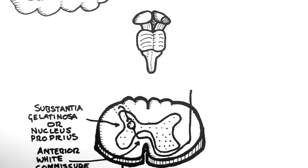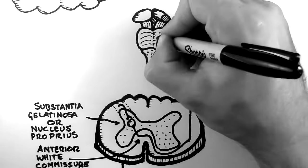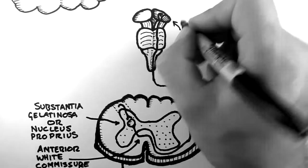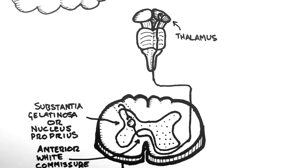The spinothalamic tract then ascends through the brainstem and synapses onto the thalamus. This is why the tract is called the spinothalamic tract, because it ascends from the spinal cord to the thalamus.